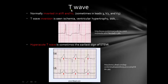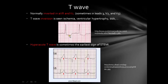The last thing in the ECG complex is the T wave. Normal T wave inversion occurs in leads AVR and V1; sometimes also in leads 3, V2, and V3. T wave inversion is commonly seen in ischemia, ventricular hypertrophy, and other causes — the most important thing is to detect the inversion. The hyperacute T wave is sometimes the earliest sign of ST elevation myocardial infarction — it is very important to pick up, as it indicates myocardial infarction.